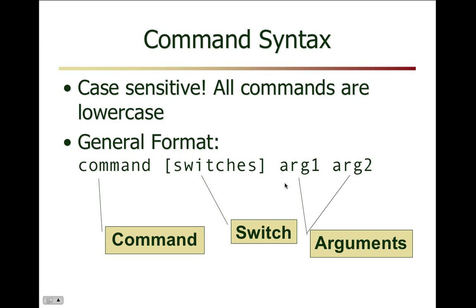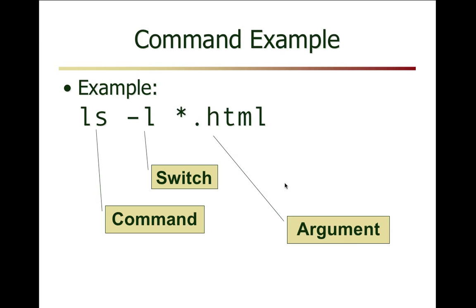Every single Unix command follows the same format, making it easy in terms of processing commands. Knowing the switches — and you can look up the manual pages for all available switches — is key. Here's an example of the ls command with the minus l switch and star dot html as the argument. You can string multiple switches together, like minus l h w, applying all the different options toward the command.